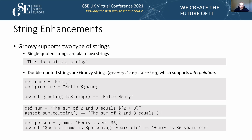You can also reference map keys using dot notation inside interpolation. For example with a map 'person = [name: "Henry", age: 36]', you can use '$person.name' to access the name key — the dot acts as a delimiter for that interpolation. This outputs 'Henry is 36 years old'.